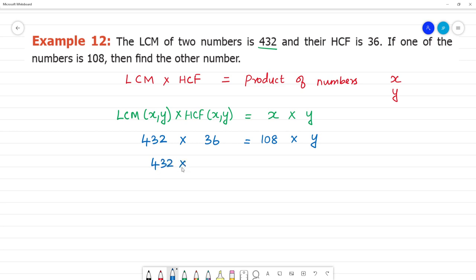432 multiplied by 36 divided by 108 is equal to y. What is y? y is another number.